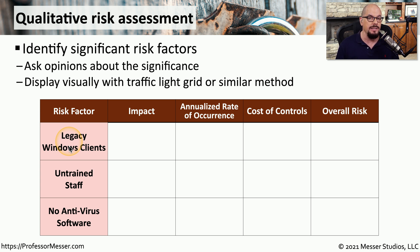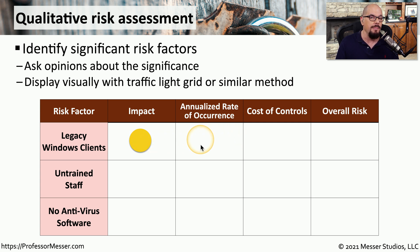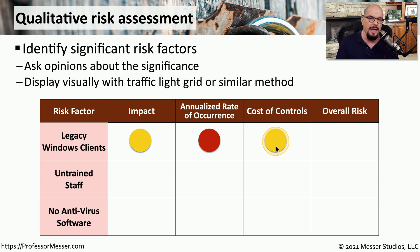It may be that we're not able to upgrade these systems because they're running proprietary hardware or software that will only run on older Windows machines. We may believe that has a minimal impact, so we'll assign a yellow color. But this is something that may happen constantly throughout the year, so we'll make that a red color. If we want to address this concern, we'll need security controls at about a yellow color, which means the overall risk for these legacy Windows clients we'll mark with red.